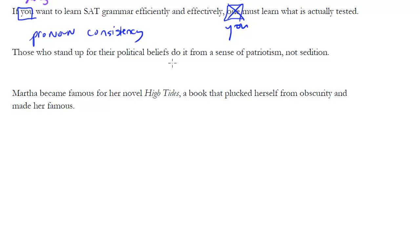Those who stand up for their political beliefs do it from a sense of patriotism, not sedition. Let's see—'those' here is a demonstrative pronoun. It doesn't have to refer to anything, so 'those' as written here is fine because it's referring to those people who do this kind of thing. 'Who' is a relative pronoun, so 'who stand up for their political beliefs' is referring back to 'those,' just telling us more about those kind of people. 'Their' is plural, refers back to 'those' which is also plural. No problem.